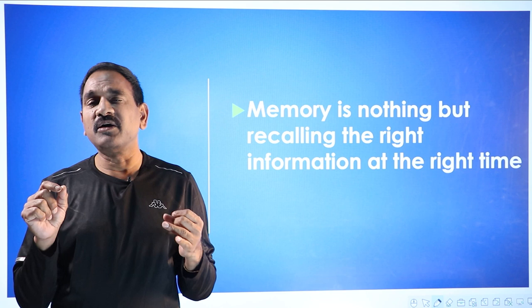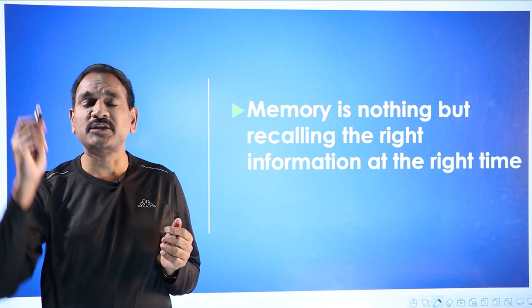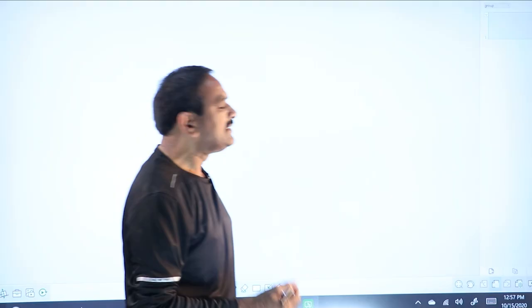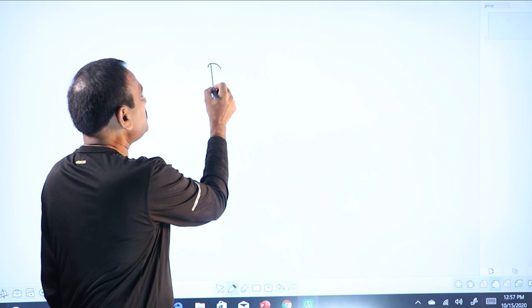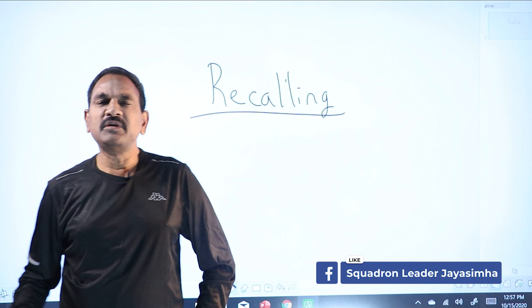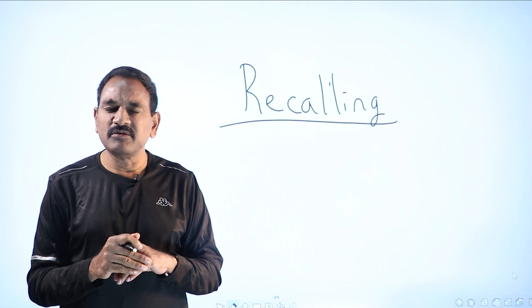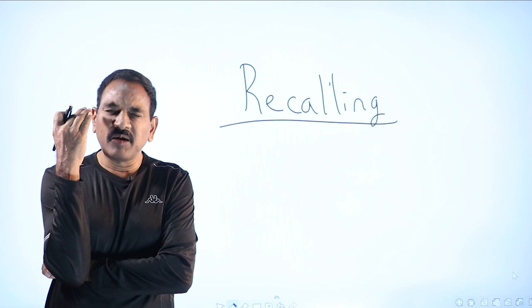For that, you have to do something called recalling practice. So, how to do recalling practice? After you study for 20-25 minutes, keep the book down, take a break. When you come back, try to keep the book down without opening it. Close your eyes and try to recollect what did you know, how much did you understand, how much did you recollect. If you are able to remember everything, very good, then go to the next one.